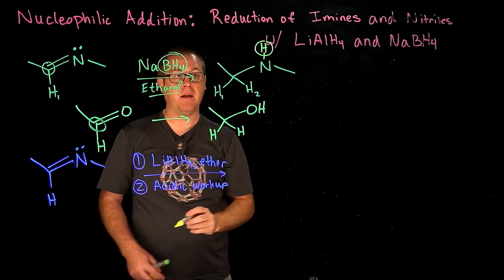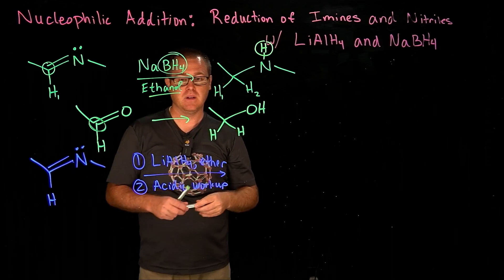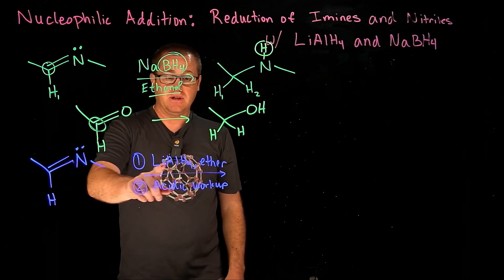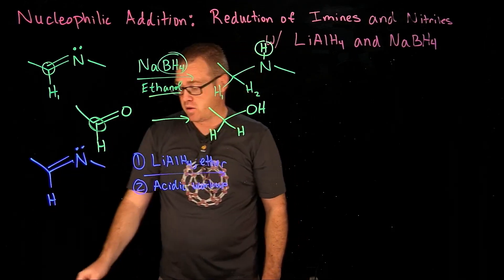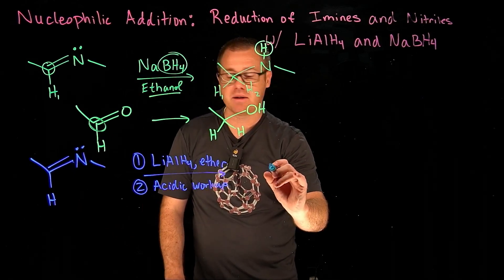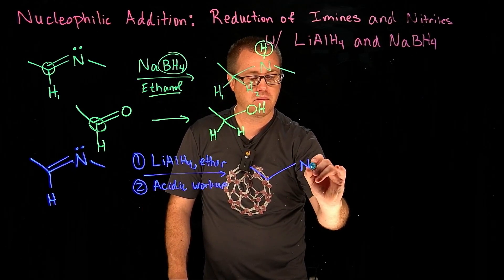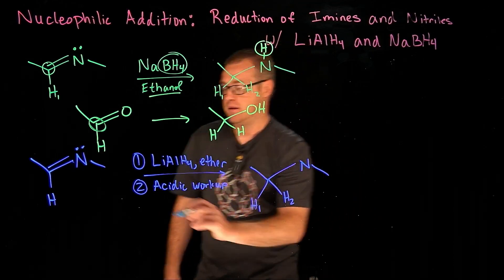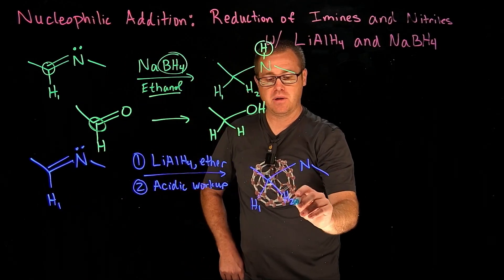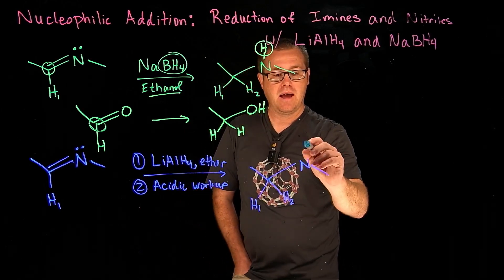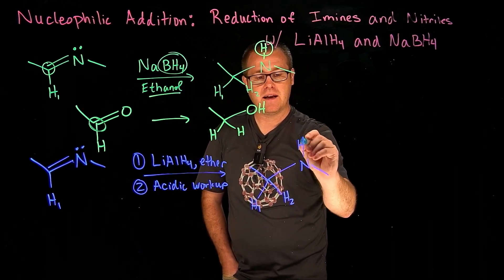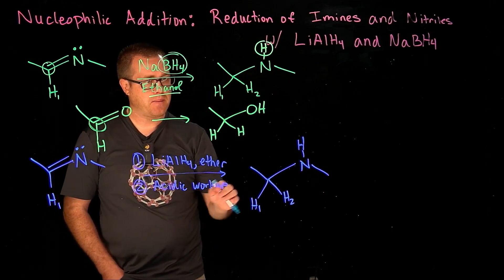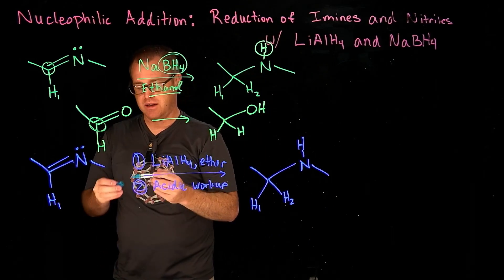When we use lithium aluminum hydride for the imine, we are going to get the exact same product — H2 and H1. So H2 came from the hydride, and then the hydrogen that was added to the nitrogen atom is going to come from the acidic workup.